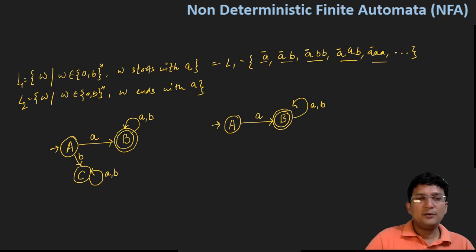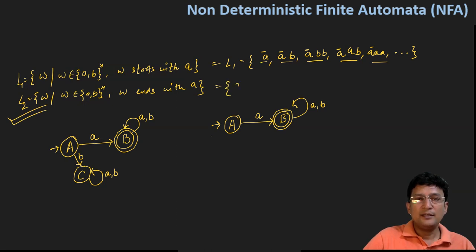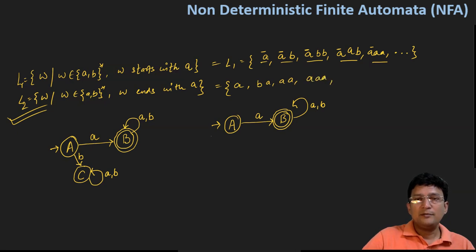Now let's write the NFA for language L2. Language L2 says the strings which end with A. So it may be A, it may be BA, it may be AA, it may be AAA, it may be ABA, and so on. So it is an infinite language.